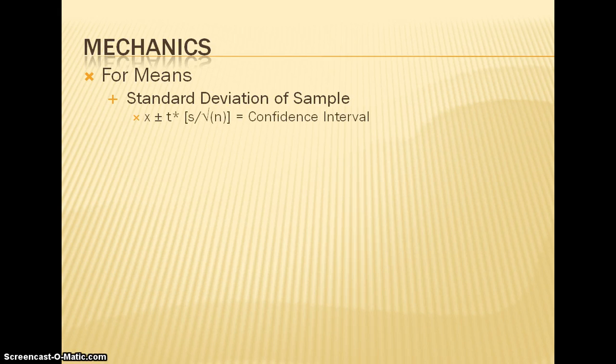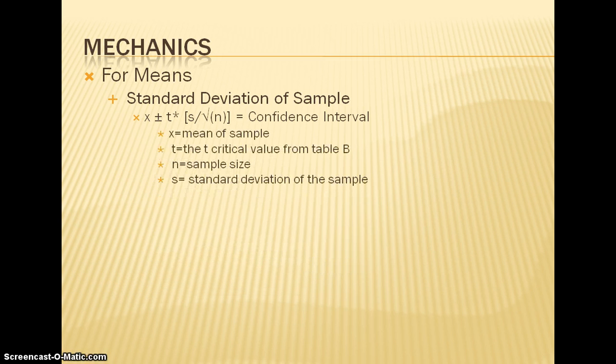For means, when you are given a standard deviation of a sample, the formula is x plus or minus t times s over square root of n. x, in this case, is the mean of the sample. t is the t-critical value from table B in the formula sheets. n is the sample size and s is the standard deviation of the sample.